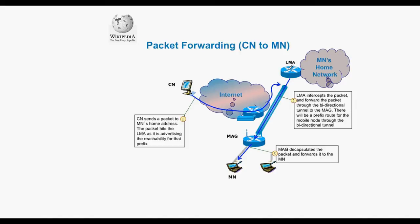The local mobility anchor, after receiving the packets, removes the outer header and sends the packets to the destination — that is, the correspondent node. When packets come from the correspondent node, the correspondent node sends packets to the home address of the mobile node, which is handled by the local mobility anchor. The LMA forwards the packets to the mobile access gateway through the bidirectional tunnel, and the mobile access gateway decapsulates the packet and sends it to the mobile node through the home network prefix.